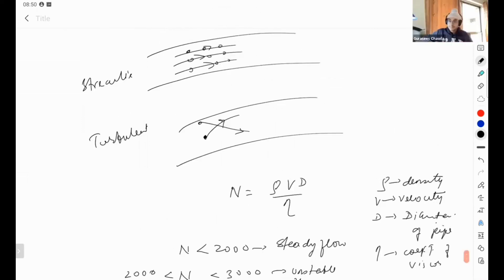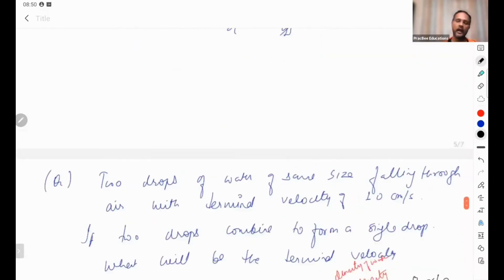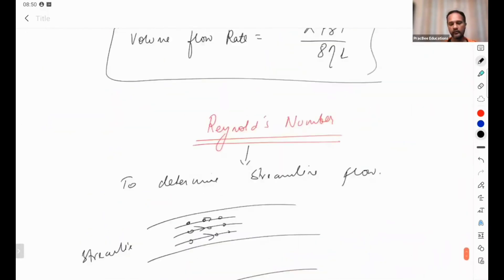This is another formula that you have to remember, this is mainly 4 formula. Which is 4 formula: Reynolds number, Poiseuille's equation, Stokes theorem, and there is this general viscosity.